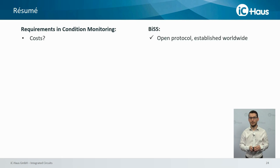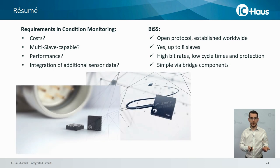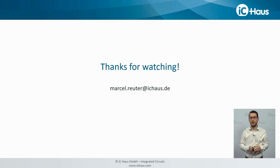In summary, BiSS is open source and established all over the world. It enables up to 8 slaves connected to one master, offers high bit rates and low cycle times, and protects transmitted data using a CRC — or additionally with forward error correction in BiSS line. Bridge components are available for both interfaces: ICBL for BiSS line and ICMCB for the BiSS interface, enabling simple sensor data integration via various interfaces. For further information, please check our website. Thank you very much for your attention — please do not hesitate to contact us.